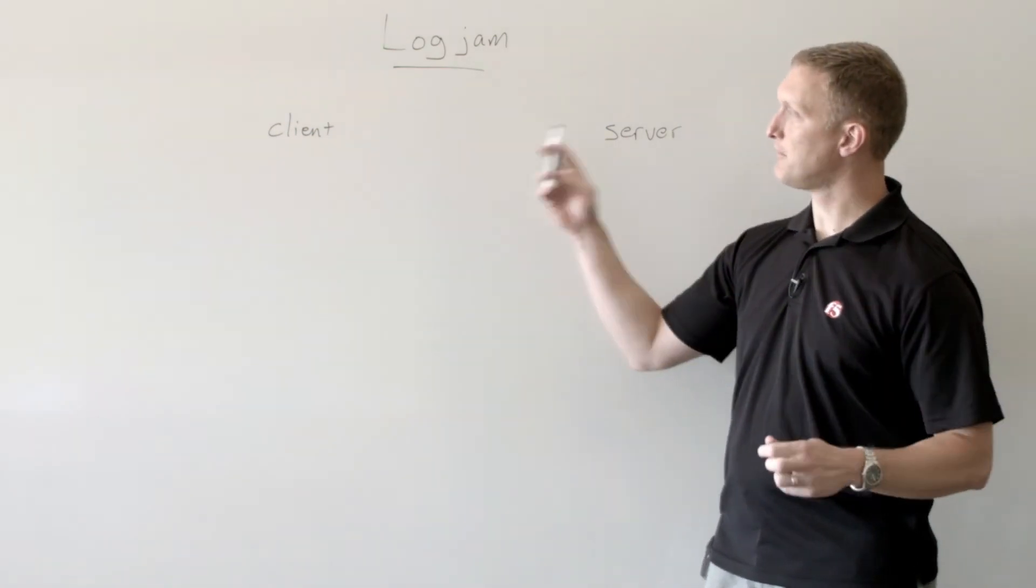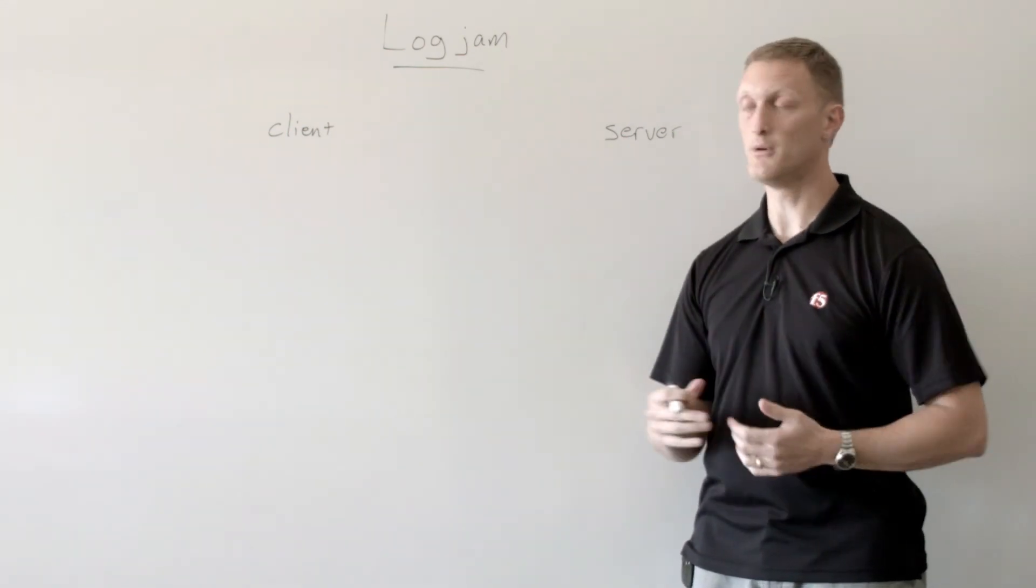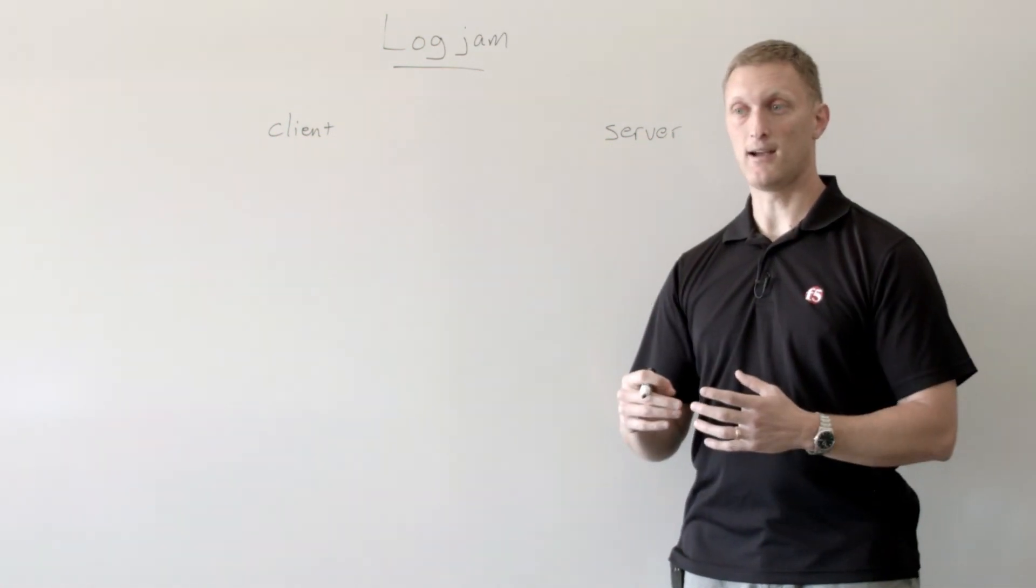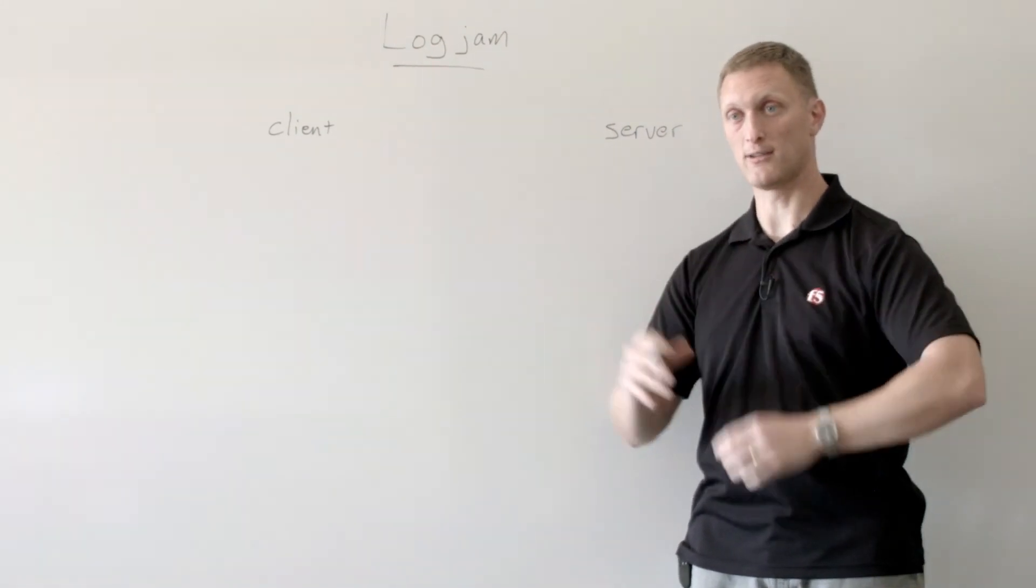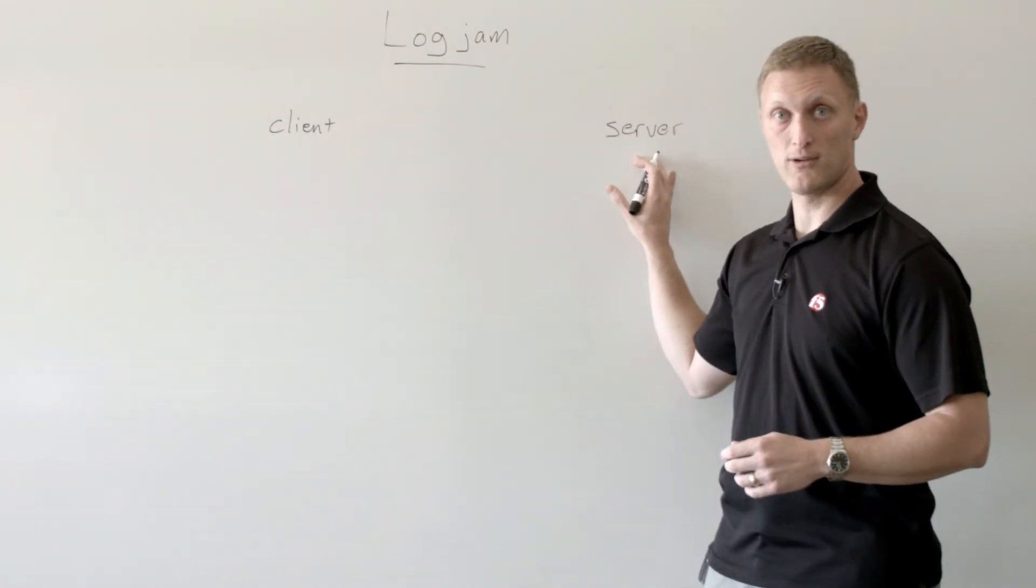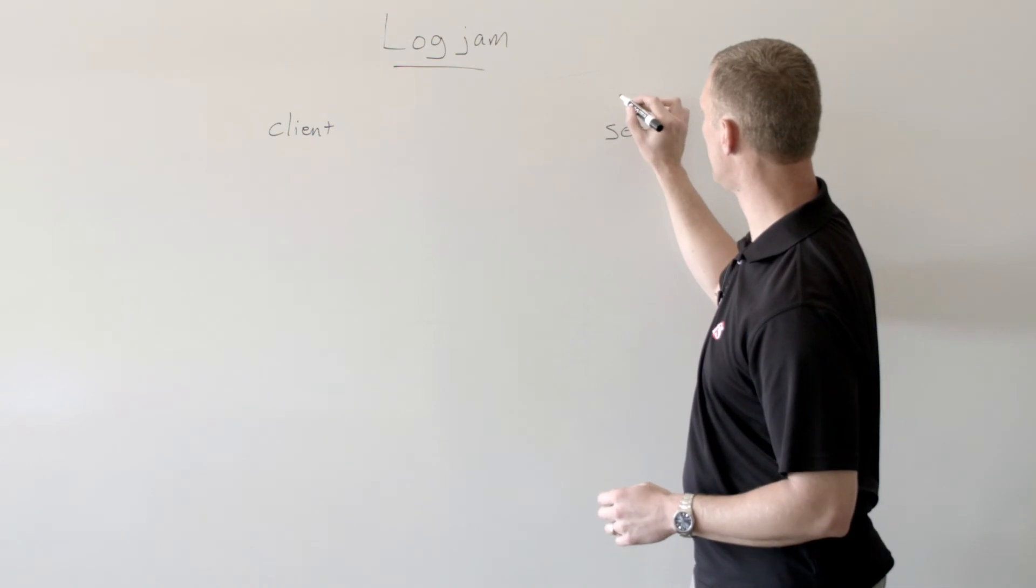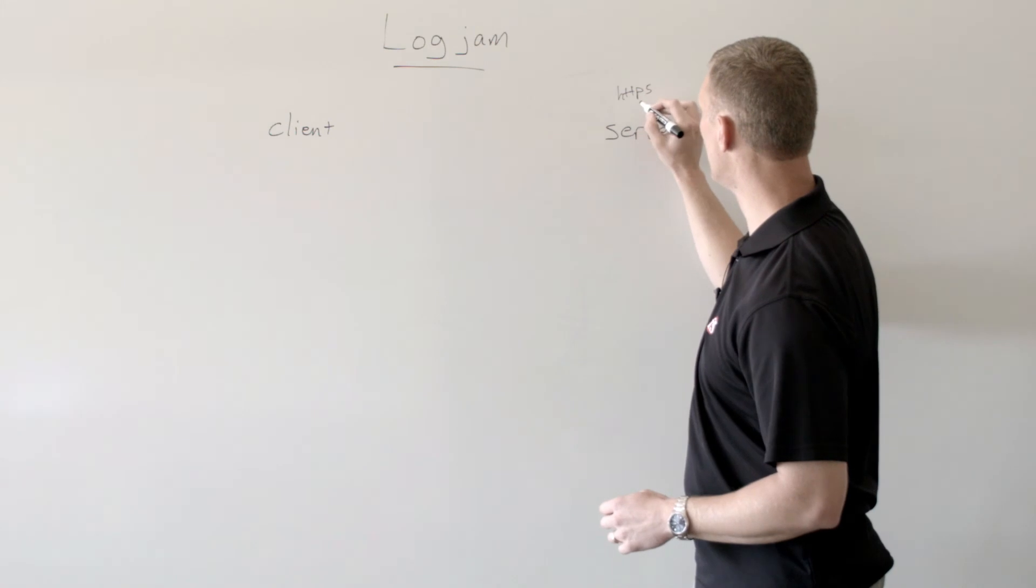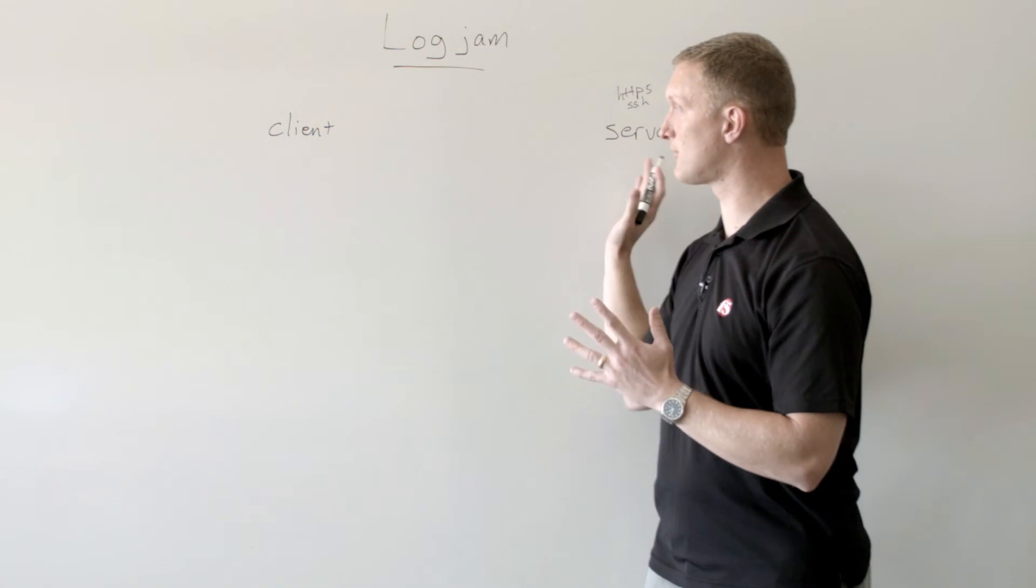And so the basics of logjam, the reason that it's a significant issue, number one is it affects potentially several people, and then two, what it can do is pretty devastating if you're actually affected. So if you can imagine, you've got a client who's accessing your web server over here, and this web server is going to be all secure, so I'm going to put maybe like an HTTPS or maybe an SSH kind of connection. But nonetheless, it's going to be a secure connection.